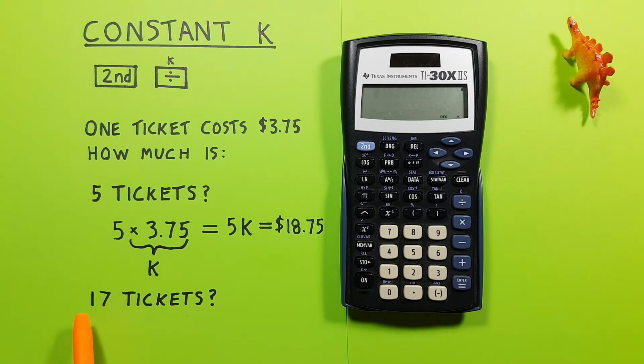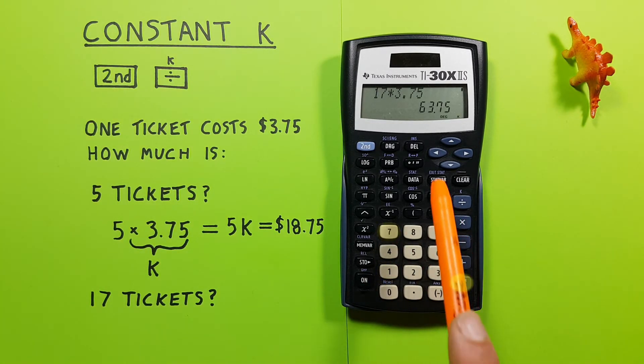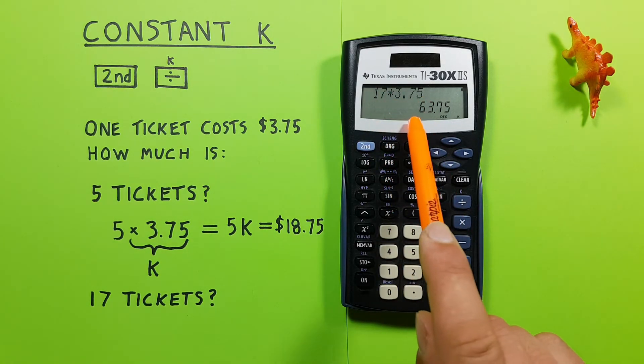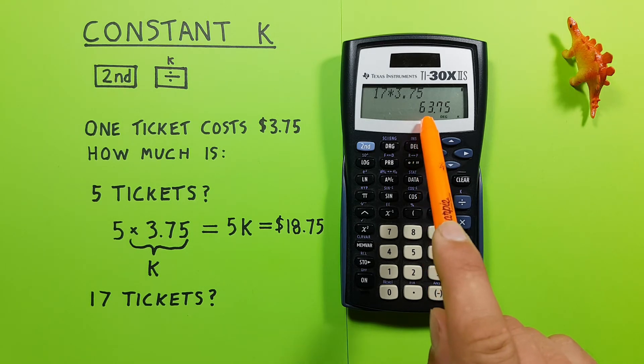Oh, but looks like some more people want to go. Now we need to get 17 tickets. Again, all we have to do is enter the 17, press equals, and that times 3.75 is automatically applied. So we see our 17 tickets now cost $63.75.